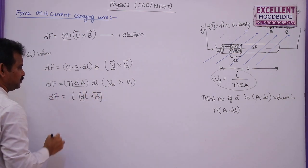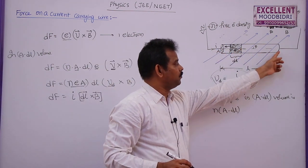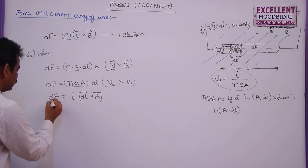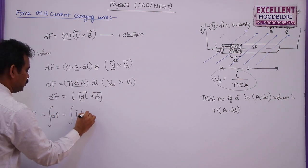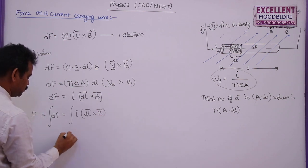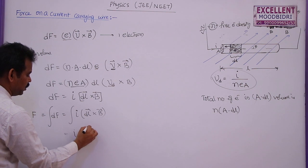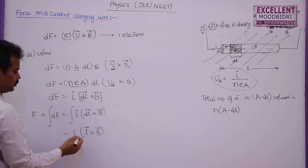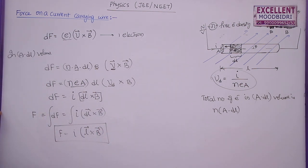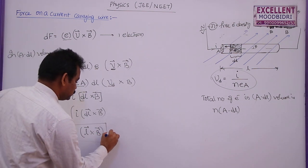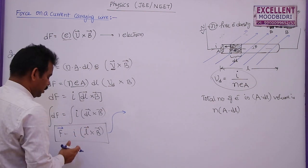This is the force on the small portion of the current-carrying conductor. The total force is F = ∫dF = I∫(dL̄ × B̄). Since I is constant and B̄ is constant in a uniform field, this simplifies directly to F̄ = I(L̄ × B̄), because ∫dL̄ = L̄. This is the force on a current-carrying conductor in a uniform magnetic field. Force is perpendicular to both L̄ and B̄.